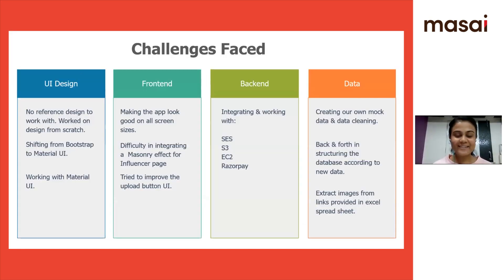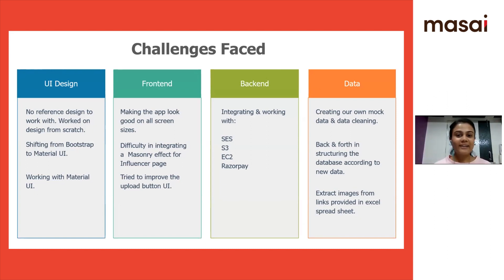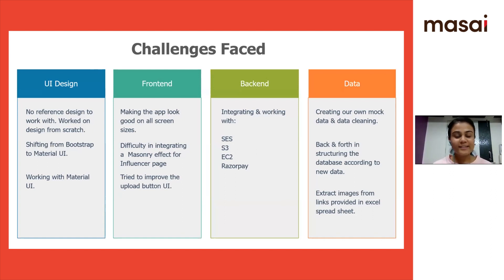We did face a lot of challenges. Major ones being starting with UI design — initially we had started with Bootstrap, but later we changed to Material UI, so we had to do some rework there. On the front-end, we were asked to present a masonry effect on the influencers page, so that took some time. On the back-end, integrating AWS's SES, S3, and EC2 services took some time.